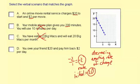You owe your friend $20 and pay him back $2 per day. So your initial value is 20, $2 per day. So what if this graph represented the amount of money that you owed your friend? You're starting at $20, and then every day, $2 is the amount you're paying back. That actually fits perfectly.